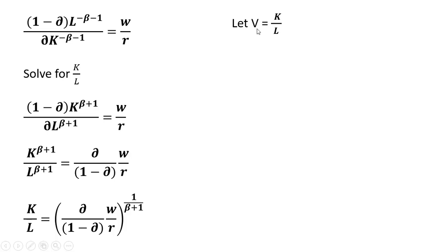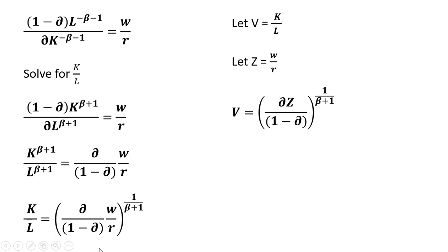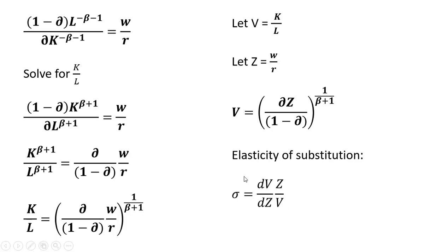The next step is to define V to equal K divided by L, and let Z equal W divided by R. So V, which is just K divided by L, equals this expression, with W divided by R substituted out as Z. The elasticity of substitution is given by taking the derivative of the V equation with respect to Z, then multiplying it by Z divided by V.